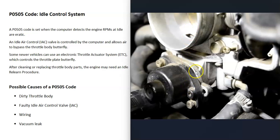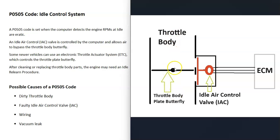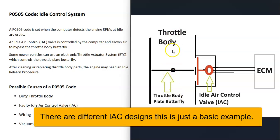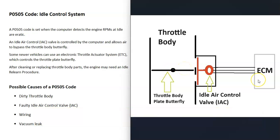The idle air control valve basically bypasses that butterfly plate. Here's a simple example: all the air goes into the engine through the throttle body, but when the engine's idling, the butterfly plate is closed. The ECM controls how much air enters through a port before the butterfly and a port after it, using a small diaphragm inside the idle air control valve.